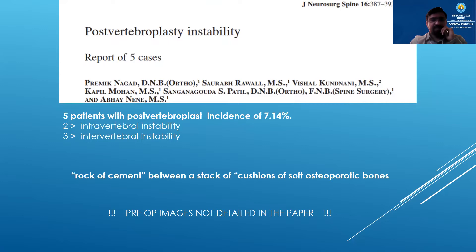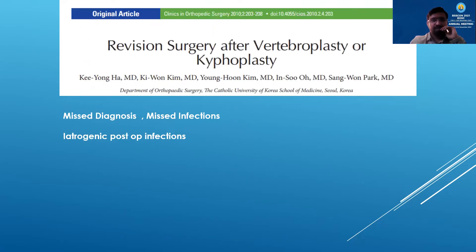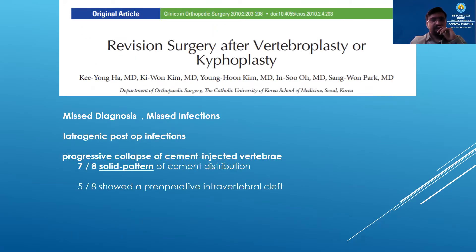They reported a 7% incidence of late instability, of which some were intervertebral and others involved the disc as well. The hypothesis is that the cement acts like a rock in between the cushions of soft osteoporotic bones. Another similar study found that a solid pattern of cement distribution causes late collapse, and 5 out of 8 such late collapses had an intravertebral cleft.